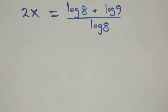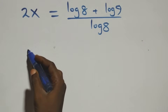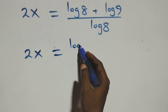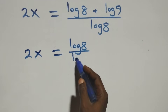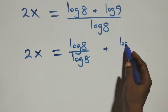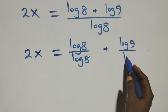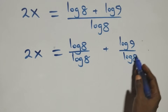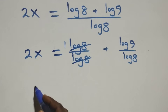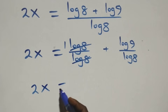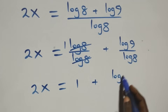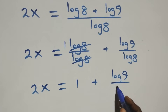We separate this into two fractions: 2x equals log 8 over log 8 plus log 9 over log 8. The log 8 over log 8 cancels to give 1, so we have 2x equals 1 plus log 9 over log 8.